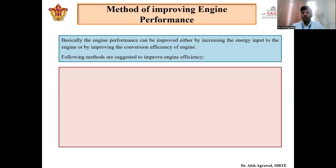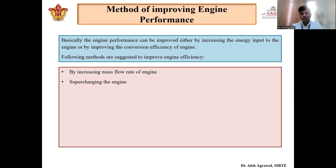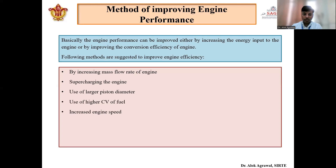Now, how to improve engine performance — what are the methods? First, by increasing the mass flow rate, the power output will be increased. Supercharging is one method where we can increase power output by inducting more charge inside the combustion chamber. If we increase the diameter of the piston, the overall swept volume will increase and it will increase the power output of the engine. Using higher calorific value fuel also improves engine performance.